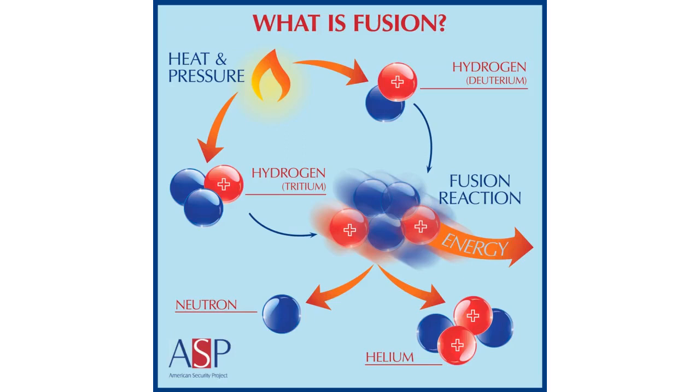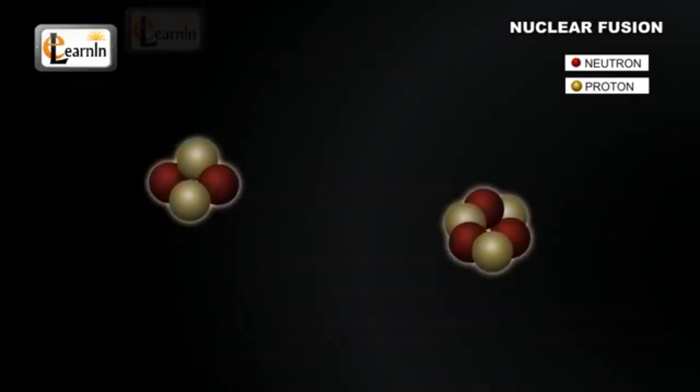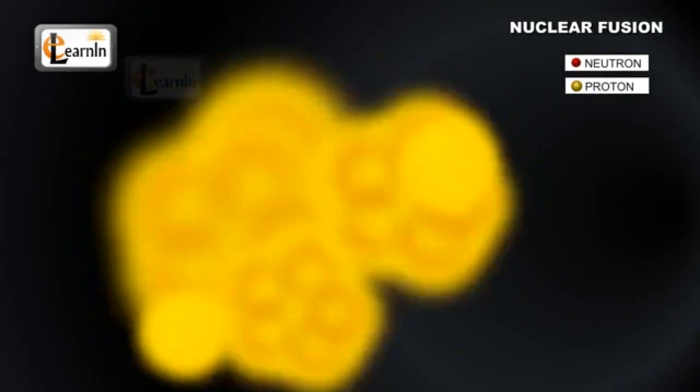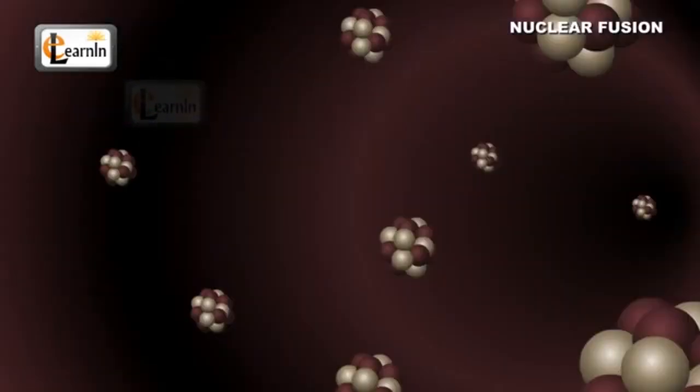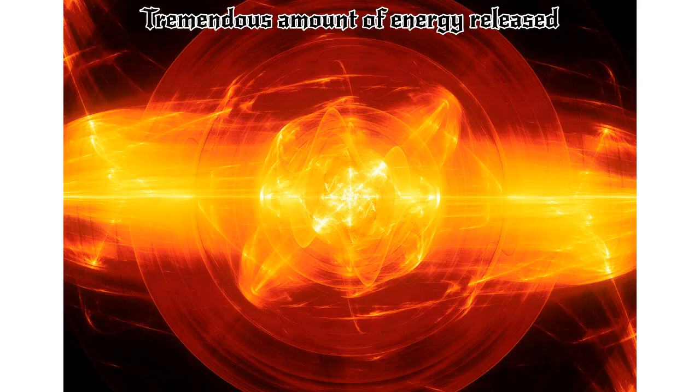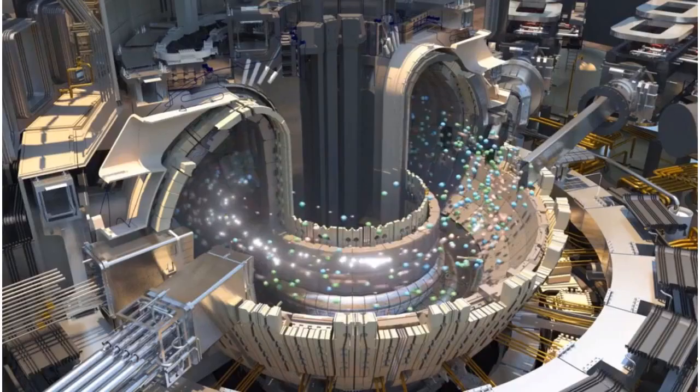Now what is nuclear fusion? It is the process by which two nuclei combine to form a heavier nucleus. The heavier nucleus has a mass less than the sum of the masses of the lighter nuclei. The lost mass is converted into energy, tremendous energy given by Einstein's famous equation E equals mc squared.